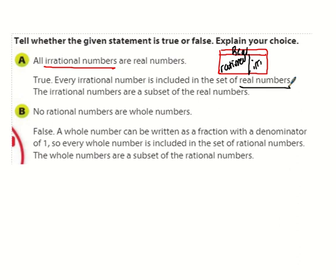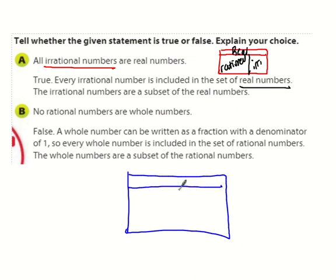So it says, true, every irrational number is included in the set of real numbers. The irrational numbers are a subset of the real numbers. Remember, the real numbers are broken into two subsets or two categories known as the rational and the irrational. B, it says no rational numbers are whole numbers. Well, if you think about the subset group, again, you guys start seeing, I keep bringing this up, but we have our rational numbers over here that then have the whole and the integer.